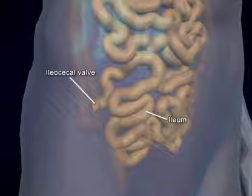After passing through the last segment of the small intestine, any remaining undigested and unabsorbed food material enters the large intestine through the ileocecal valve.